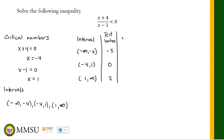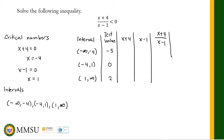We have two factors: (x + 4) and (x - 1). In the last column we determine the sign of (x + 4) divided by (x - 1). When x = -5: (-5 + 4) is negative, (-5 - 1) is negative, so negative divided by negative is positive. When x = 0: (0 + 4) is positive, (0 - 1) is negative, so positive divided by negative is negative. When x = 2: (2 + 4) is positive, (2 - 1) is positive, so positive divided by positive is positive.